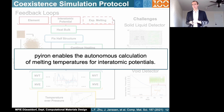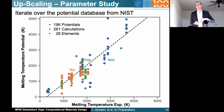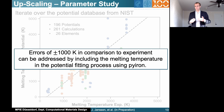To demonstrate this, I used the NIST database of the National Institute for Standards and Technology. I chose roughly 200 potentials — some include multiple elements — so in total I did over 260 melting point calculations. We see the melting temperature predicted by the interatomic potentials over the experimental melting temperature. We can see that for a single element, when there are multiple potentials, the error goes up to plus minus 1000 Kelvin. This really demonstrates that currently the melting temperature is not considered in the fitting of interatomic potentials, but it's necessary to include it, and the simulation protocol I demonstrated makes it possible to address this issue.